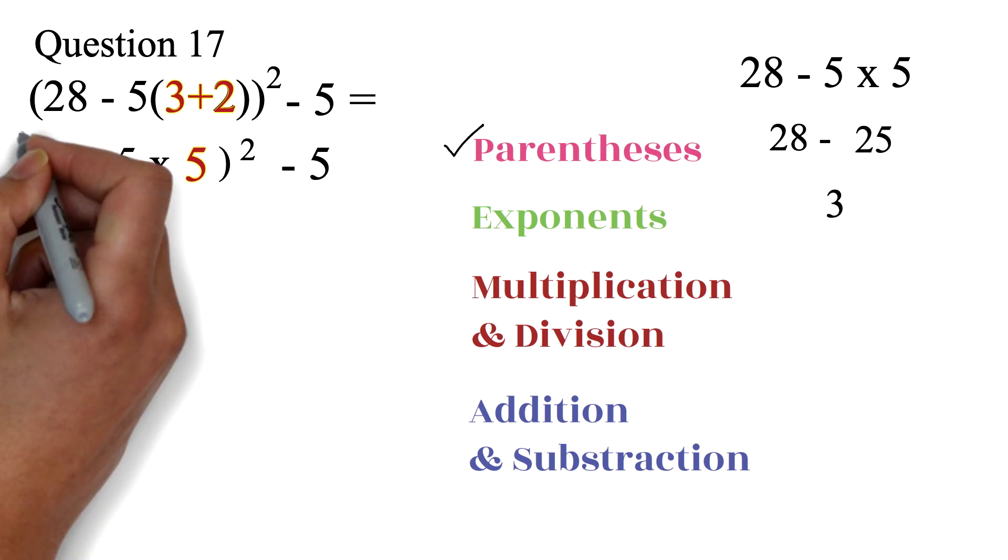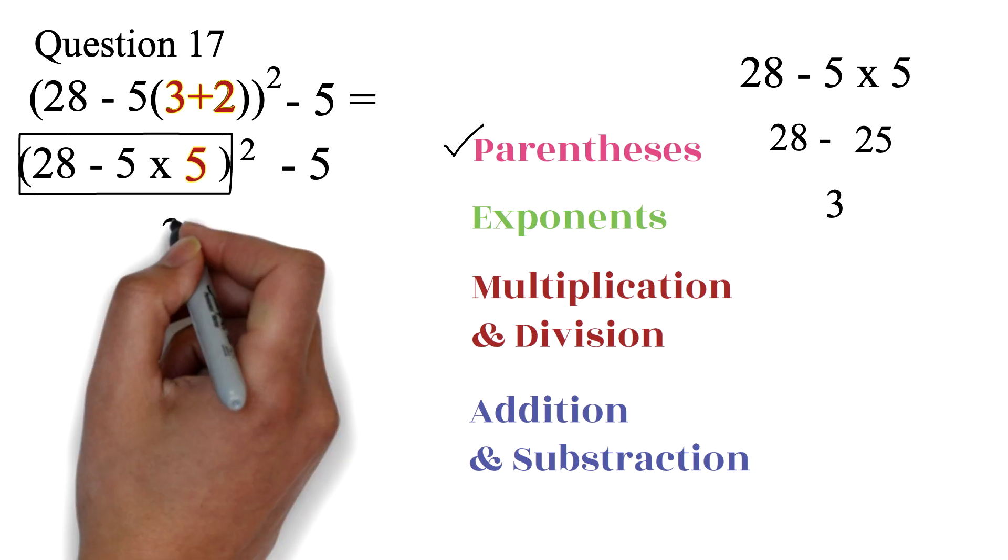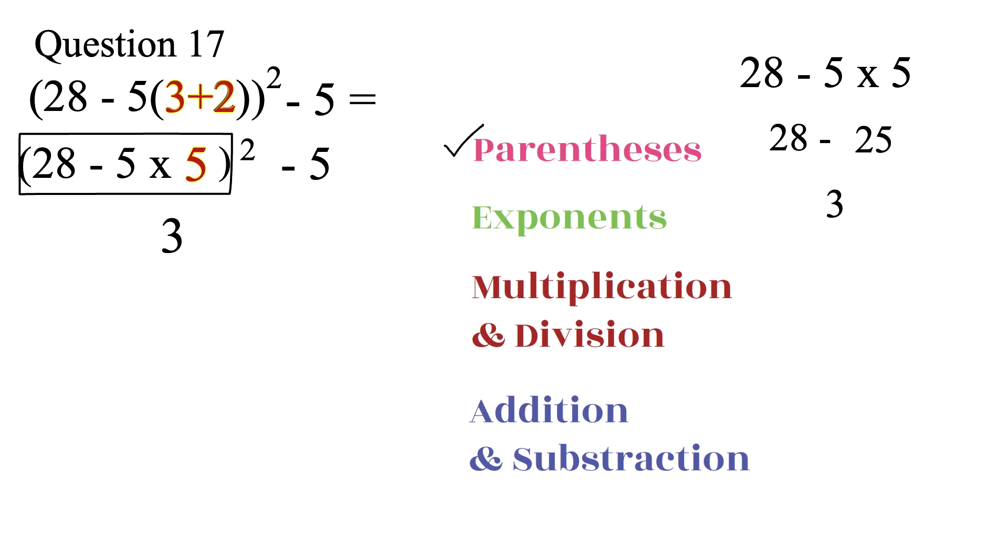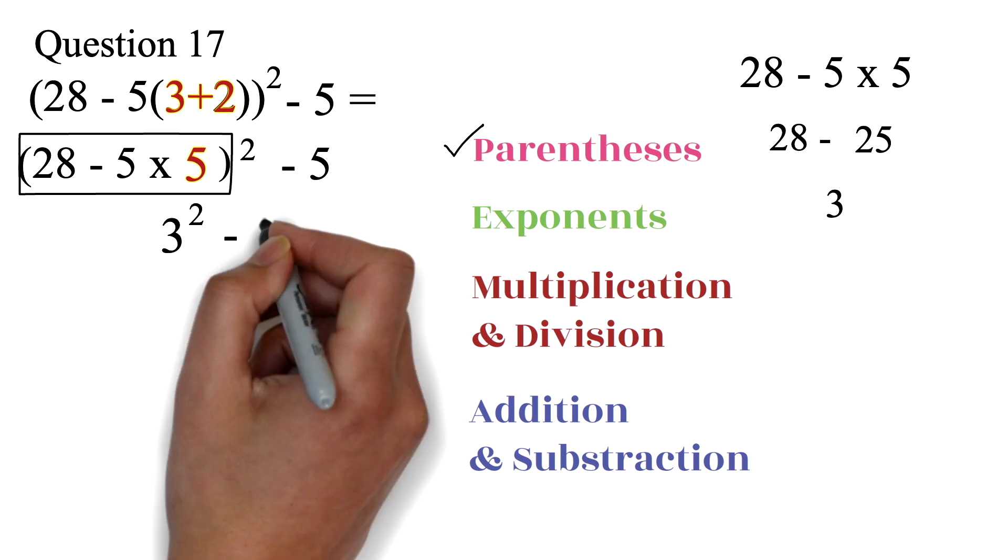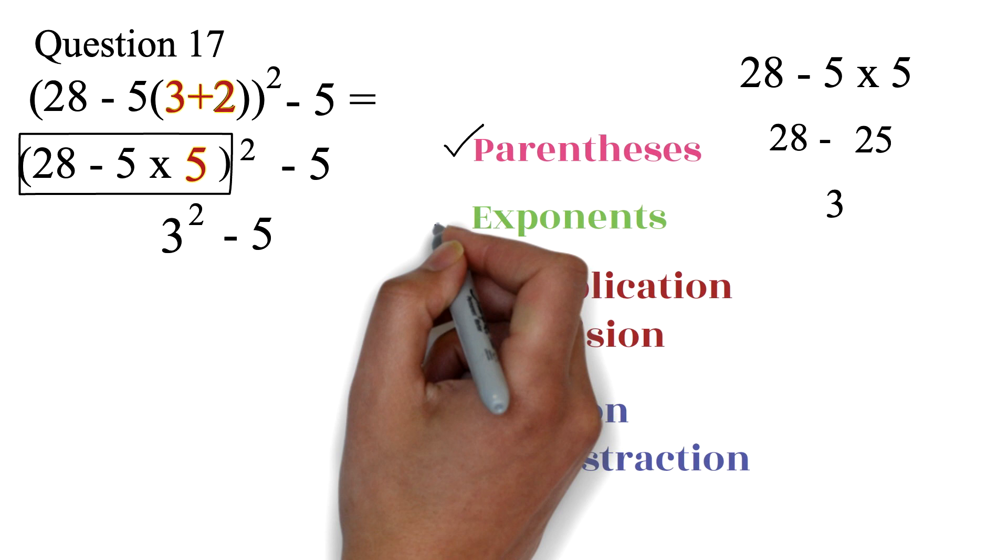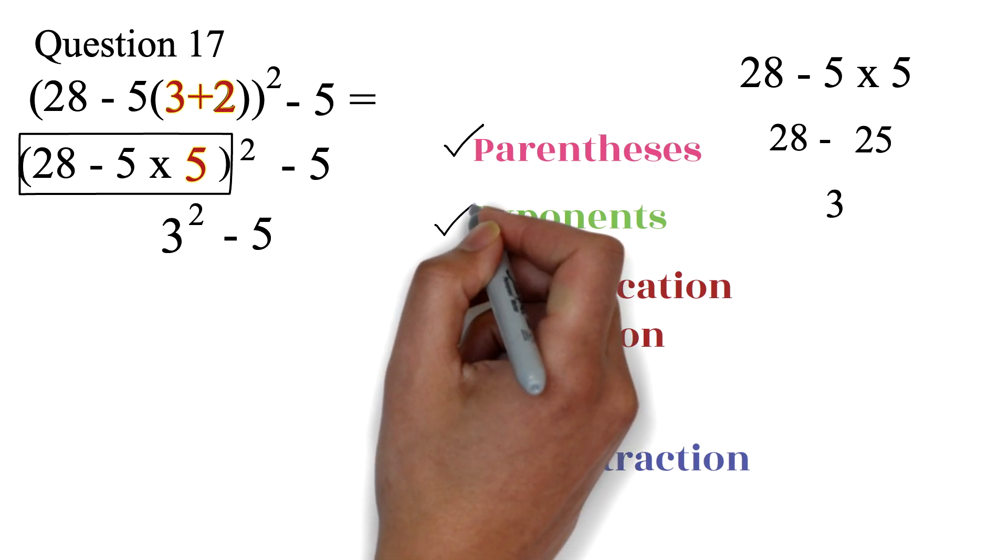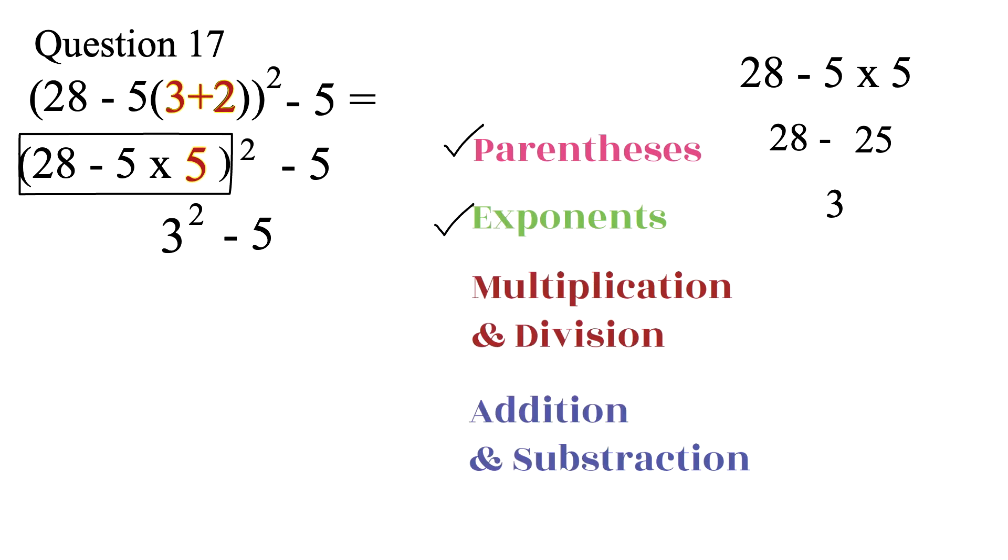Now, all these have been simplified to 3. We now have 3, exponent 2, minus 5. From the order of operations, we will do the exponent next. 3, exponent 2, is 9.